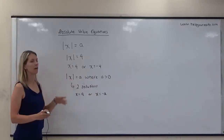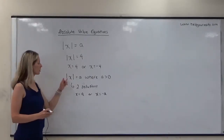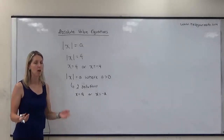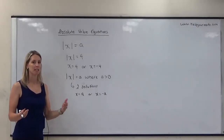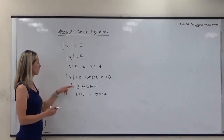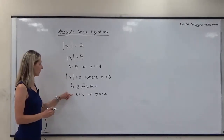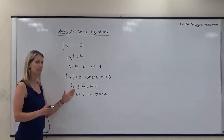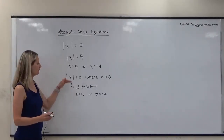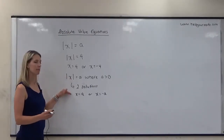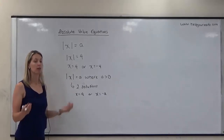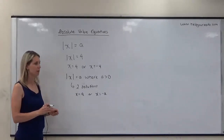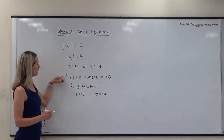It's important to note that while the example uses a single variable, the expression inside the absolute value bars could be something like 2x + 3 or (1/2)x − 17. So after setting up the two cases, you may still need to solve for the variable from there.